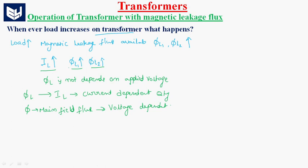The leakage flux phiL1 is always in phase with the current I1. And phiL2 is in phase with the secondary current I2. So phiL1 is the leakage flux in the primary winding and is in phase with the corresponding current I1, while phiL2 is the leakage flux in the secondary winding and is in phase with secondary current I2.